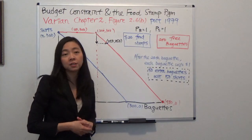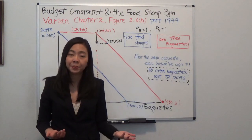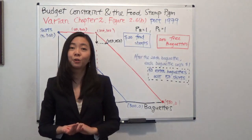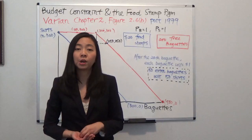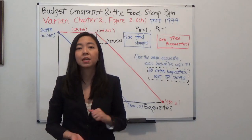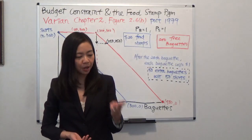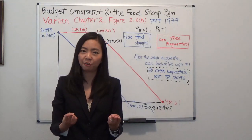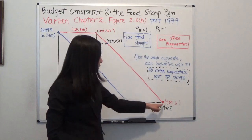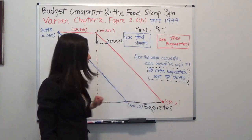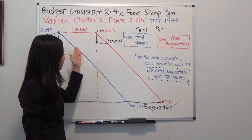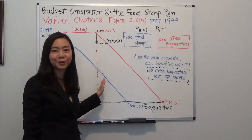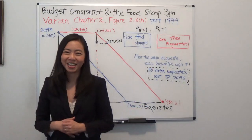Now suppose you only want to consume baguettes. You have 200 free baguettes from the government and $300. You're going to use $300 to buy baguettes only — that's 300 baguettes purchased plus the 200 baguettes given by the government, so you consume 500 baguettes and no t-shirts. So you can see how the food stamp program shifts our budget constraint out. Now we can consume more than before. I hope this helps and I'll see you next time.